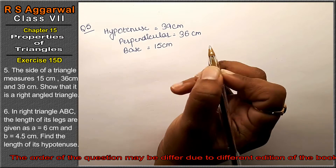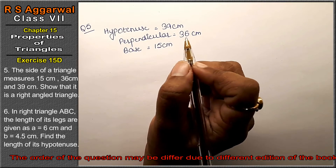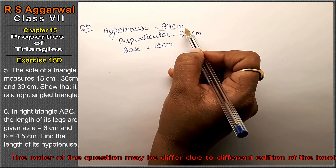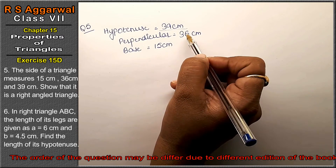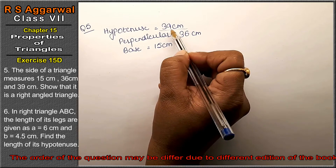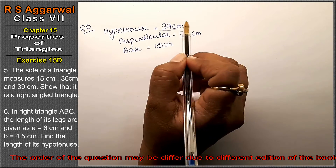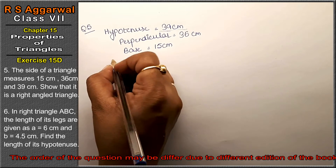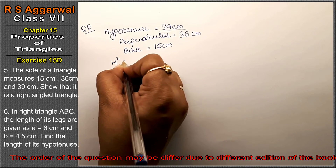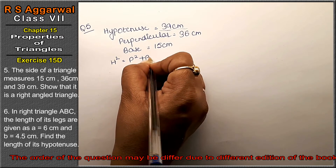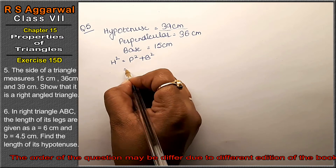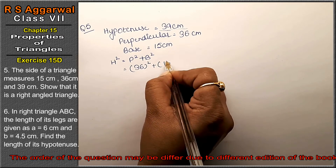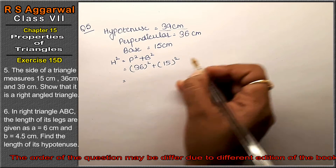Friends, now to verify whether it is a right triangle, if we don't know the hypotenuse and we need to find it from perpendicular and base, it should give the same value. So our Pythagorean theorem is: H square equals P square plus B square. So P is 36 squared and B is 15 squared.